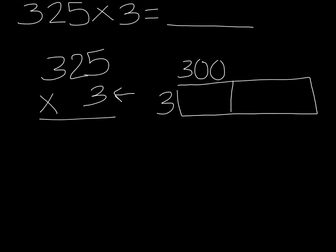Next we look at the value of the 2. What is the value of the 2? You got it. It's 20. Finally, we look at the value of the 5. What would 5 ones be? It's 5. So now we've broken apart 325 into 300, 20, and 5.